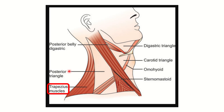The anterior boundary of the posterior triangle is formed by the posterior border of the sternocleidomastoid. On the other hand, the posterior boundary of the posterior triangle is formed by this big muscle — the trapezius muscle. So the posterior boundary is formed by the anterior border of the trapezius. The apex, or upper part, is formed by the meeting point of the sternocleidomastoid and the trapezius.